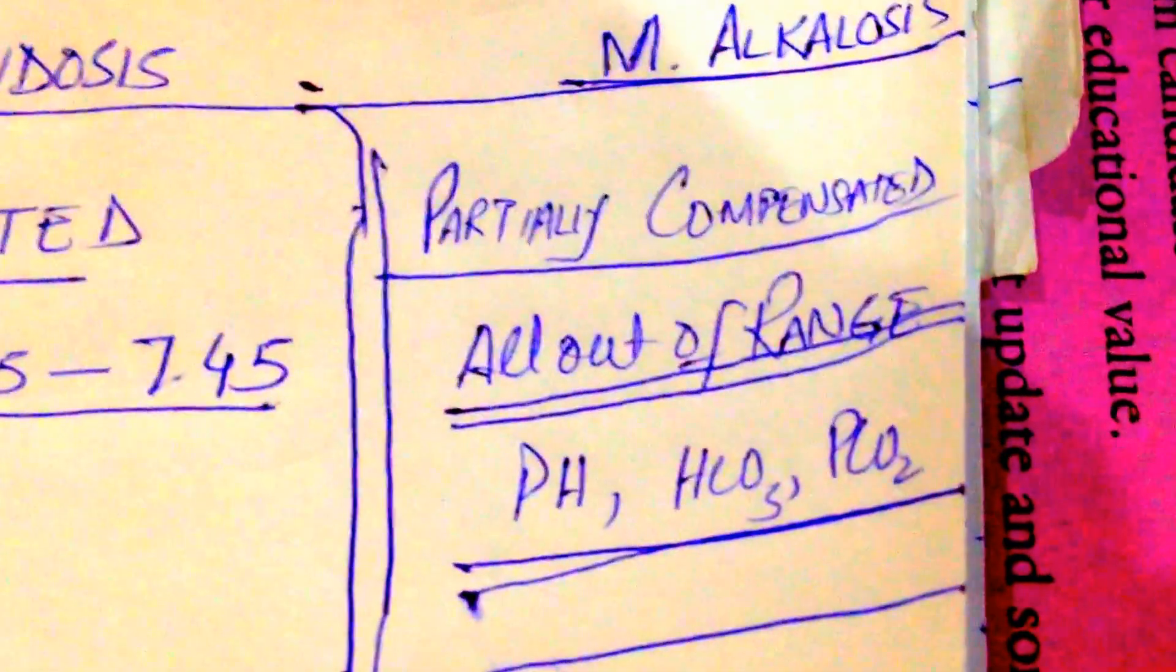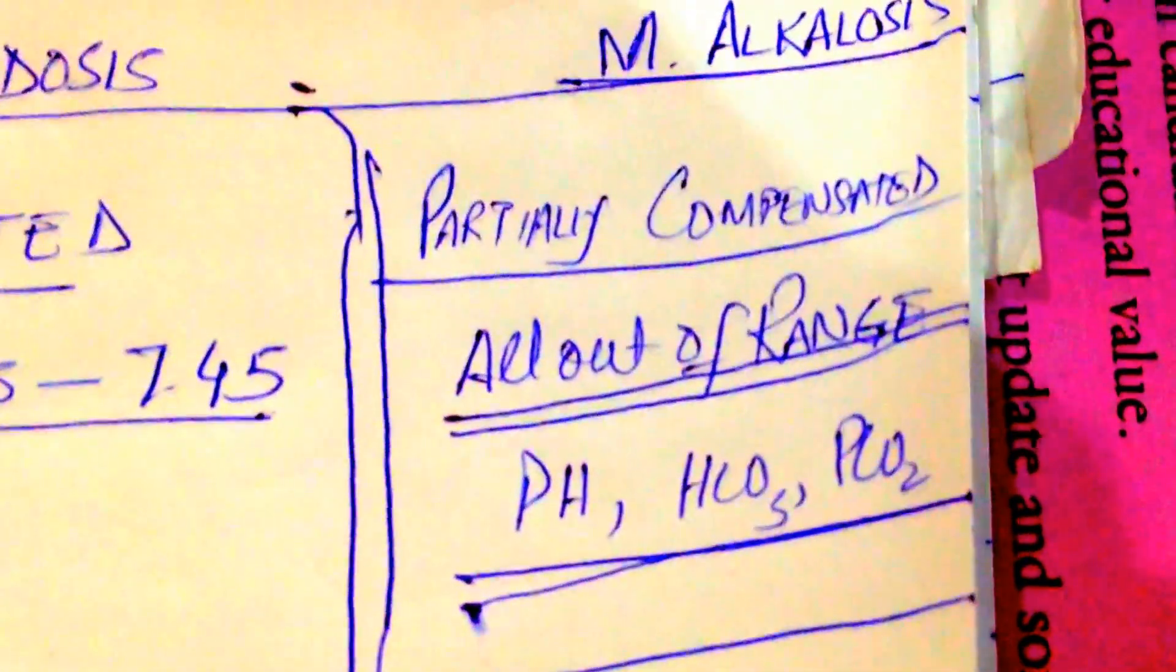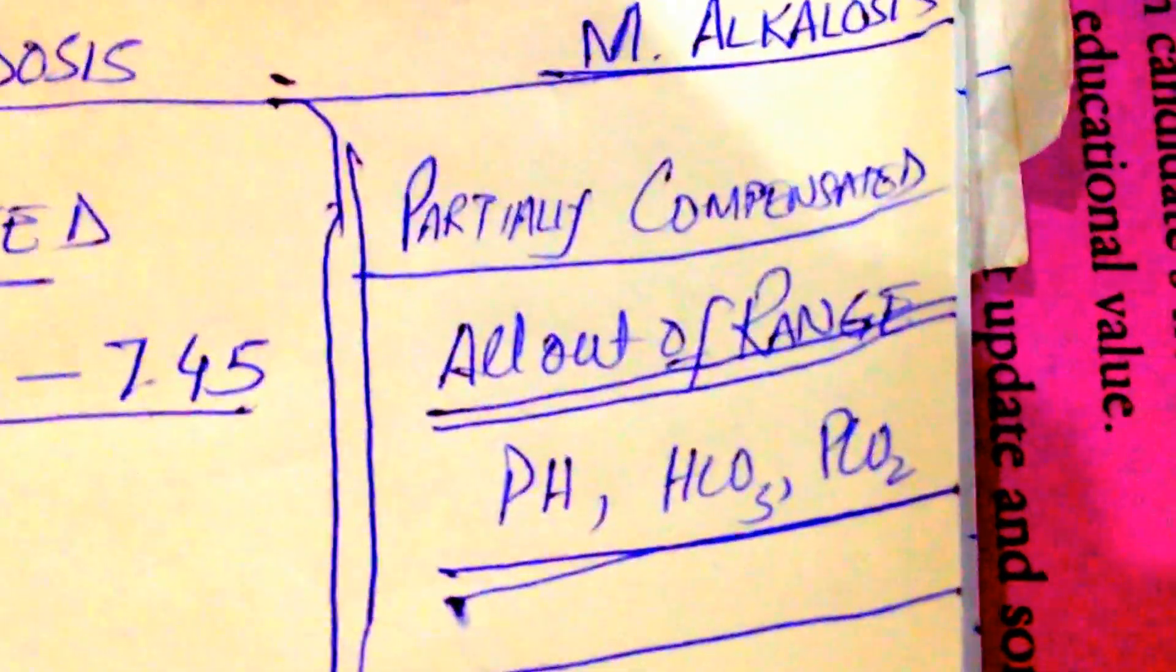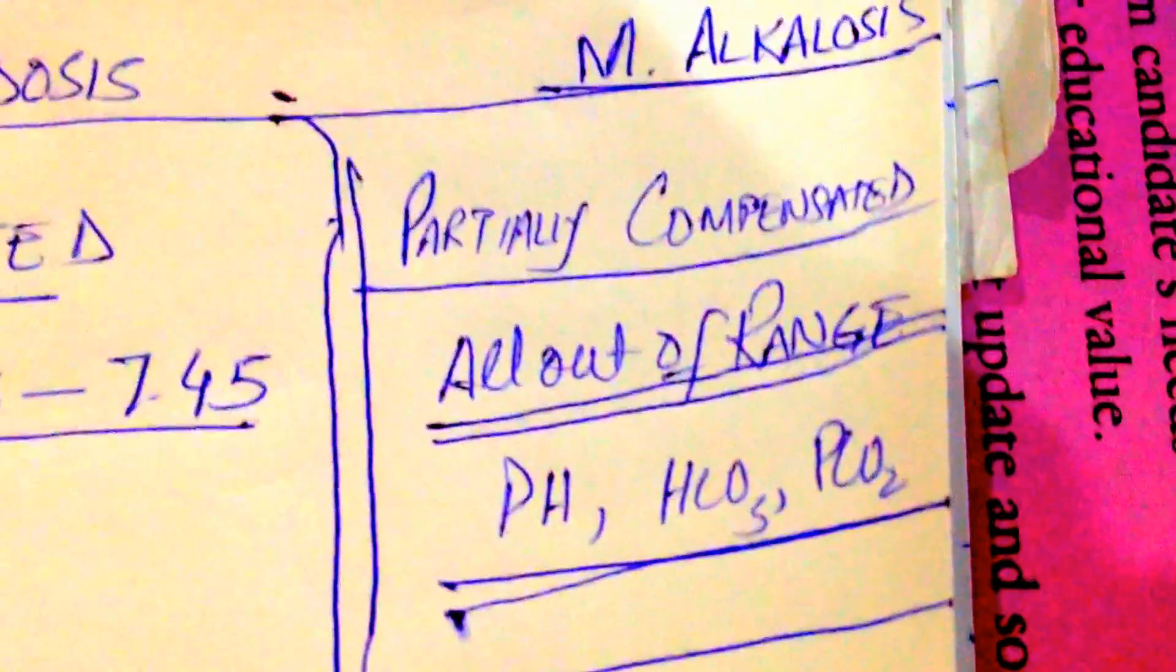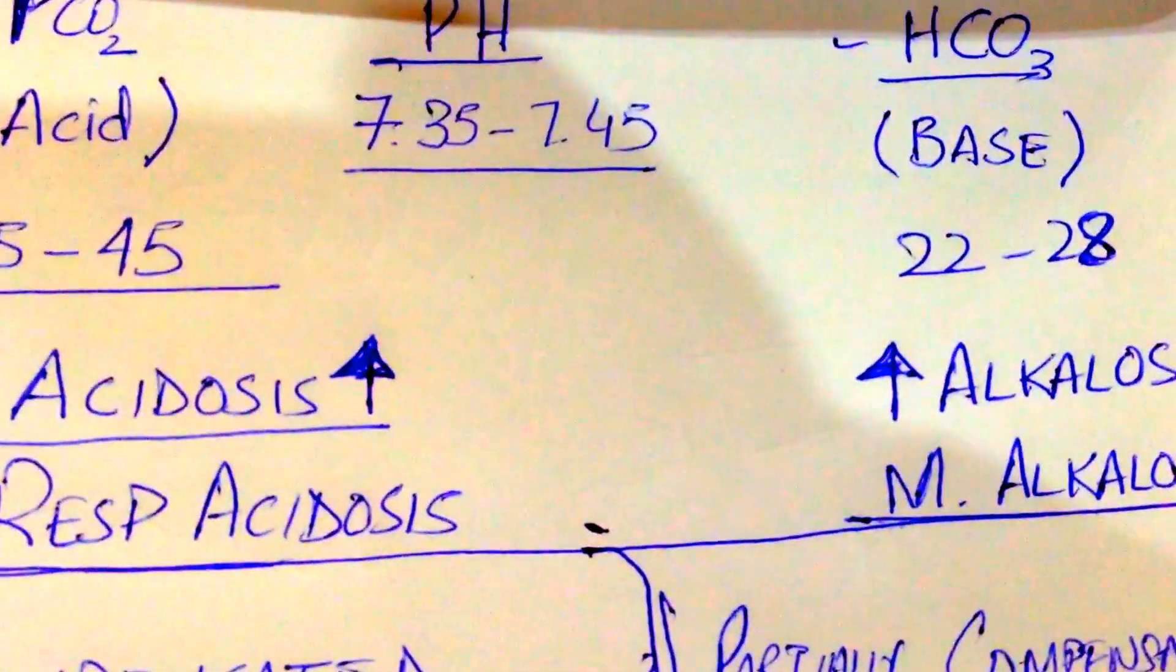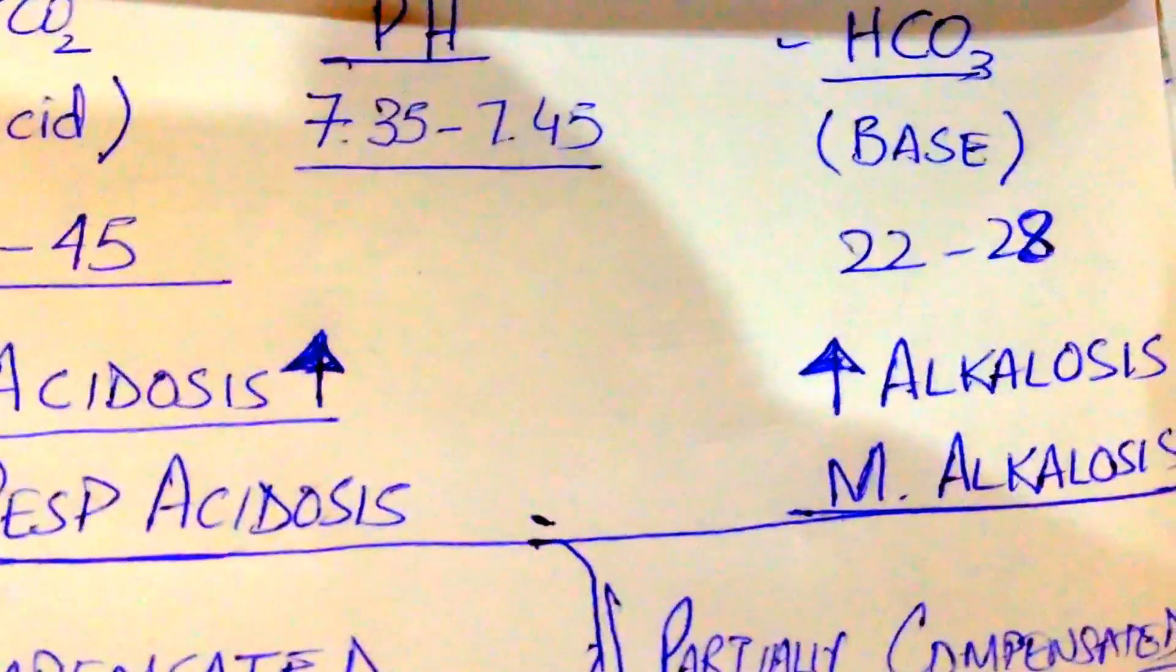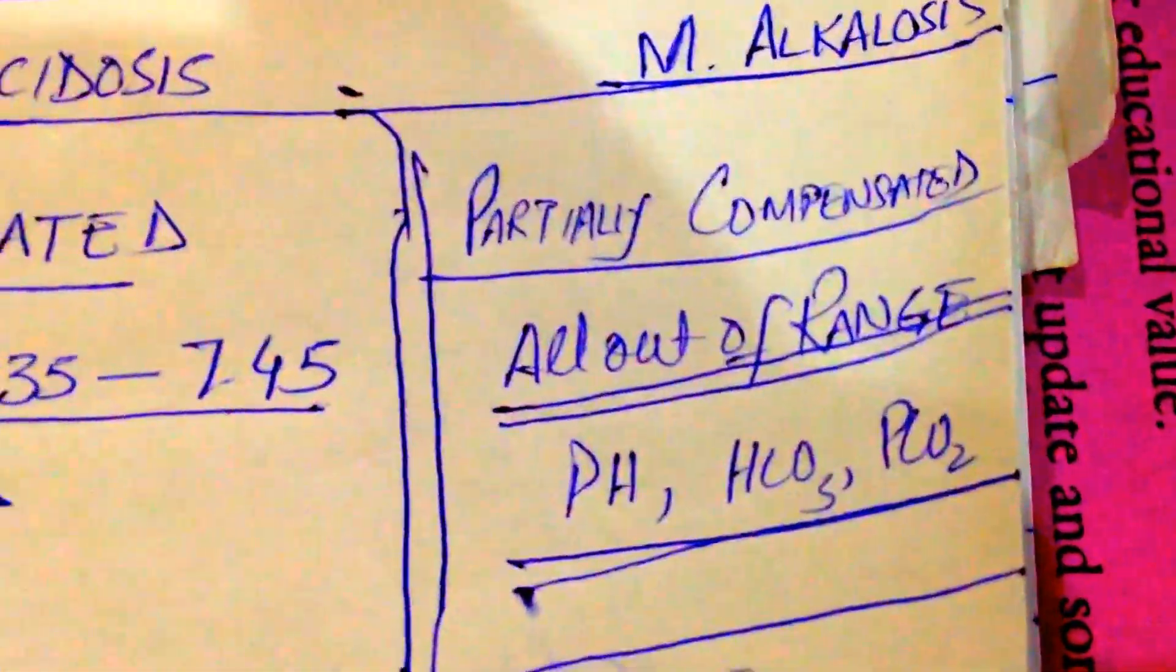Partially compensated means everything is out of range. pH, HCO3, and CO2 are all deranged. If pH is above 7.45 or below 7.35, and similarly HCO3 and PCO2 are both deranged, it is called partially compensated.